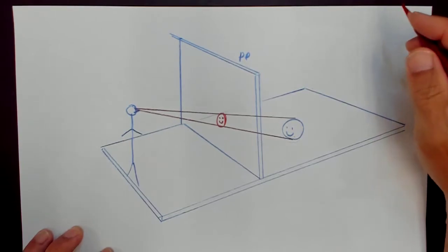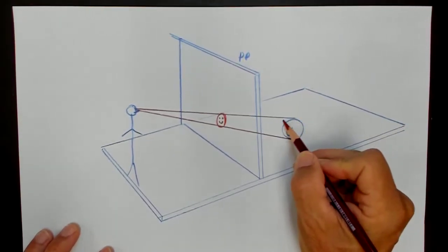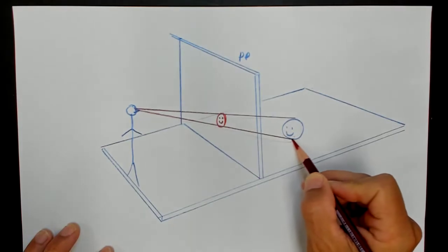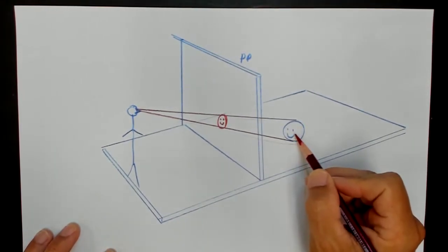The visual pyramid is this. Those light rays come in the shape of a pyramid.